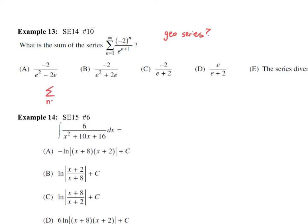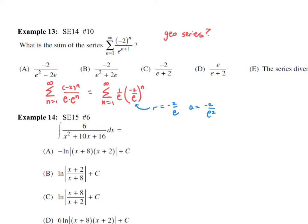We have negative two to the n in the numerator, and in the denominator let's make it e times e to the n, so we can rewrite this as one over e times negative two over e to the power of n. Now we're in geometric form. The one over e is just a multiplier; what we're focused on is negative two over e, which is our r value. The absolute value of that is less than one, so we know this converges. The a value — substituting n equals one — gives us negative two divided by e squared.